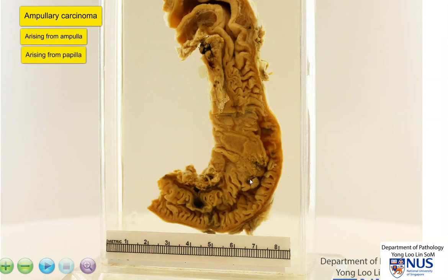Histologically, the carcinomas that arise from the papilla usually would look very much like intestinal type carcinomas. There can also be a combination of both locations — the ampulla as well as the papilla — and this is also within the range of ampullary carcinomas.